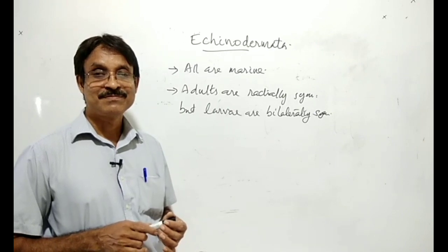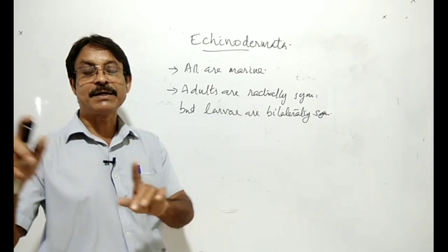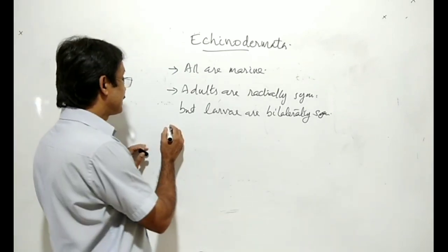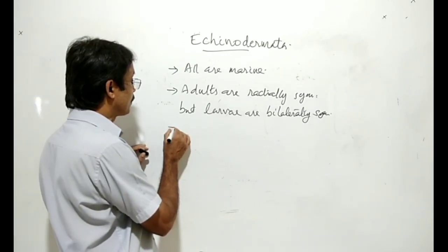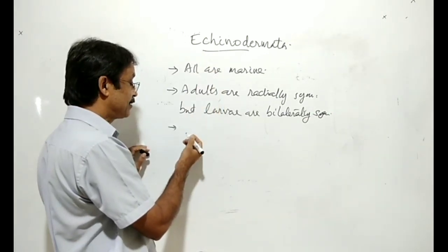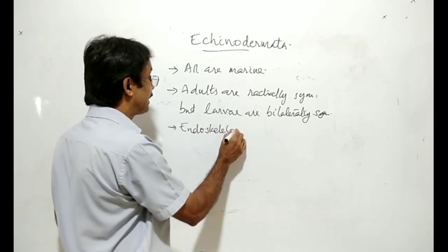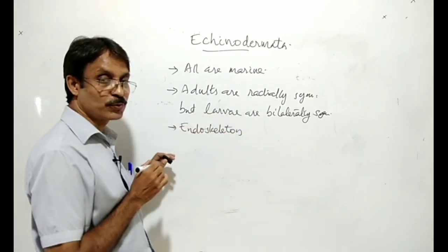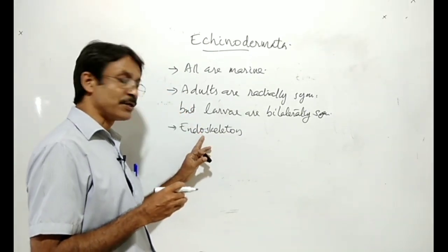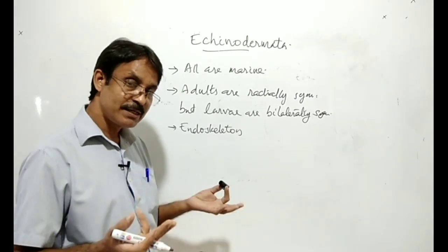Then another important character by which this phylum got the name Echinodermata is that they have an endoskeleton. If the supporting tissue is present inside the body it is endoskeleton. If the supporting tissue is present outside the body then it is exoskeleton.